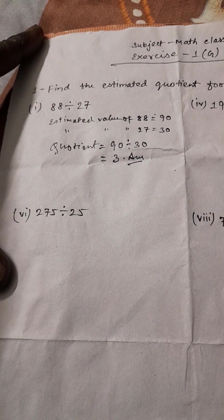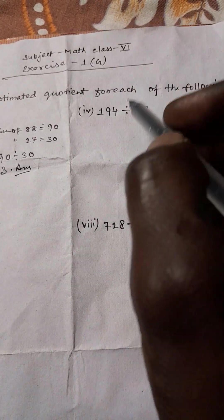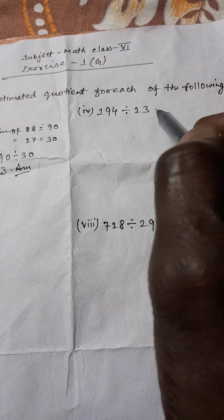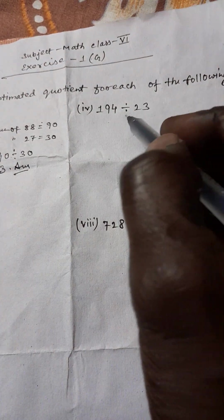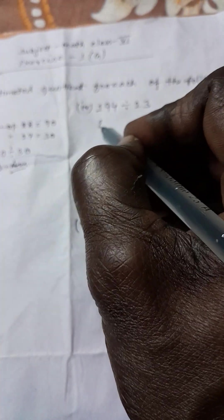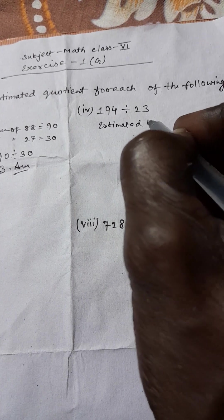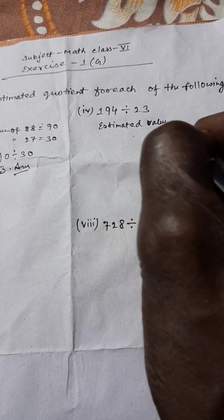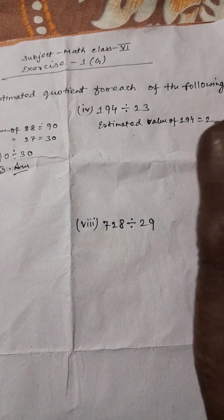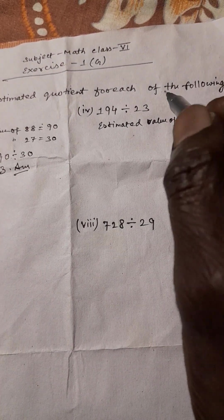In the same way, the next question is 194 divided by 23. Again, we have to first write the estimated value of 194. The estimated value of 194 is 200.